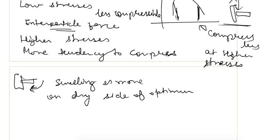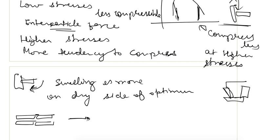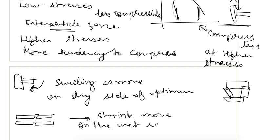For shrinkage: shrinkage will occur when the soil becomes dry. In a flocculated structure, the inter-particle forces hold the structure, so shrinkage will be less. But in the dispersed structure the particles are aligned properly, so they can shrink more. Therefore, shrinkage is more on the wet side of optimum.